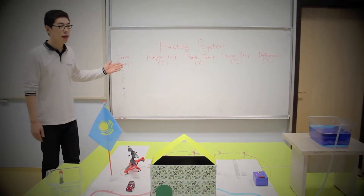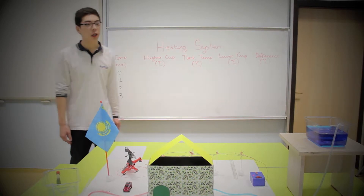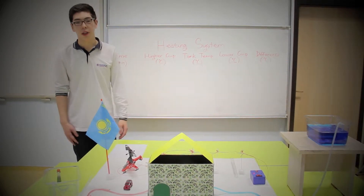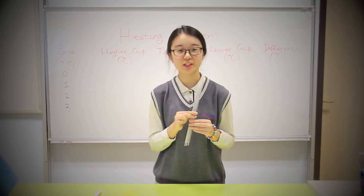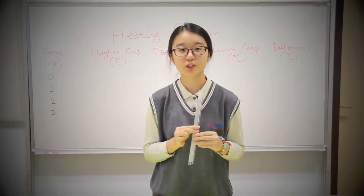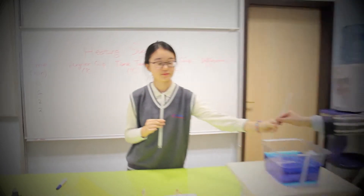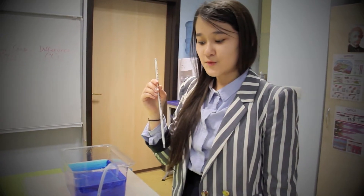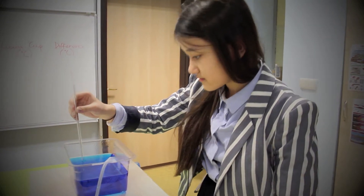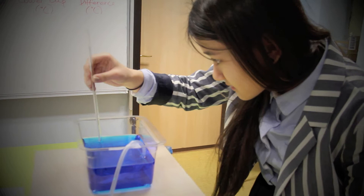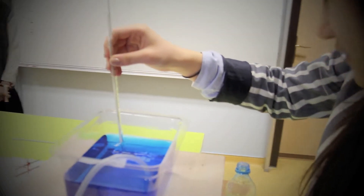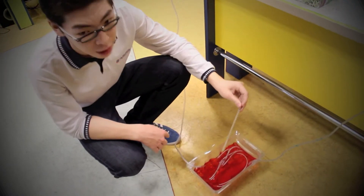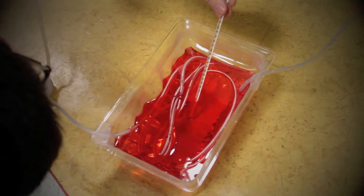We will collect data to compare the changes in temperature between the water in the higher cup and the water in the lower tank. Let's see how our project works. First, we will use three thermometers to measure the temperatures of three different tanks. We will measure the temperature in the higher tank — it's 30 degrees. The temperature of the lower ground tank is 70 degrees.